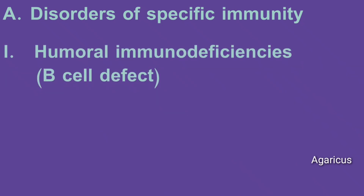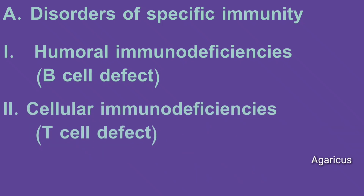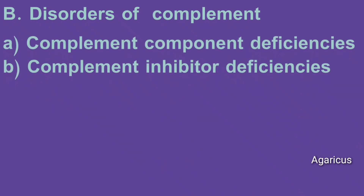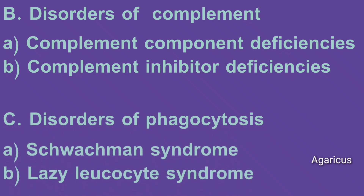The subtypes are: humoral immunodeficiency (B cell defect), cellular immunodeficiency (T cell defect), and combined immunodeficiency (B and T cell defect). Complement component deficiencies and complement inhibitor deficiencies fall under disorders of complement. Schwachman syndrome and lazy leukocyte syndrome fall under disorders of phagocytosis.